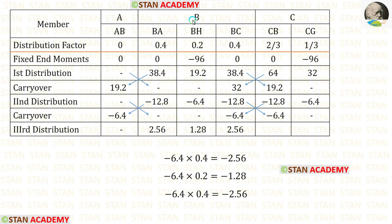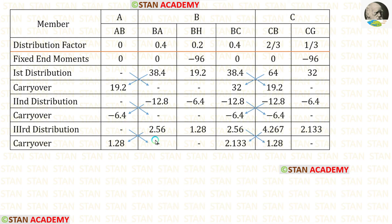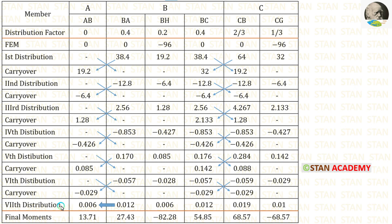Now let us do the third distribution at joint B by multiplying this value with the distribution factors. We get negative values, so we enter them as positive inside the table. Then we divide these values by 2 for the carry-over and enter the answers. In a similar way, we continue doing more distributions and carry-overs until we get very small values. I have done up to the 7th distribution and stopped there, because by the 7th distribution the values are very small.